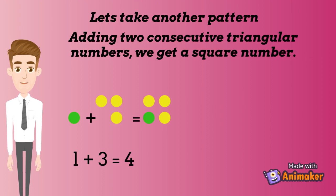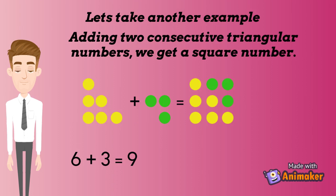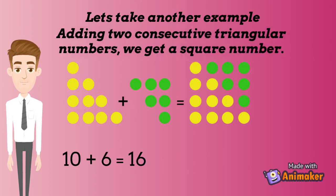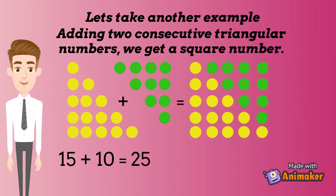Let's take another pattern. Adding 2 consecutive triangular numbers gives a square number. Adding 1 and 3: 1 plus 3 equals 4, and 4 is a square number. Adding 3 and 6: 6 plus 3 equals 9, and 9 is a square number. Adding 6 and 10: 10 plus 6 equals 16, and 16 is a square number. Adding 10 and 15: 15 plus 10 equals 25, and 25 is a square number.